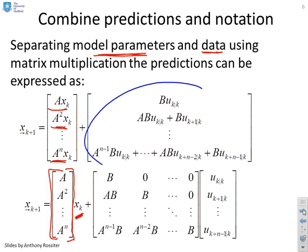In a similar way, if I look at this vector over here on the right, you'll find that I can take out the variable uk|k, uk plus 1|k, all the way down to uk plus n minus 1|k.